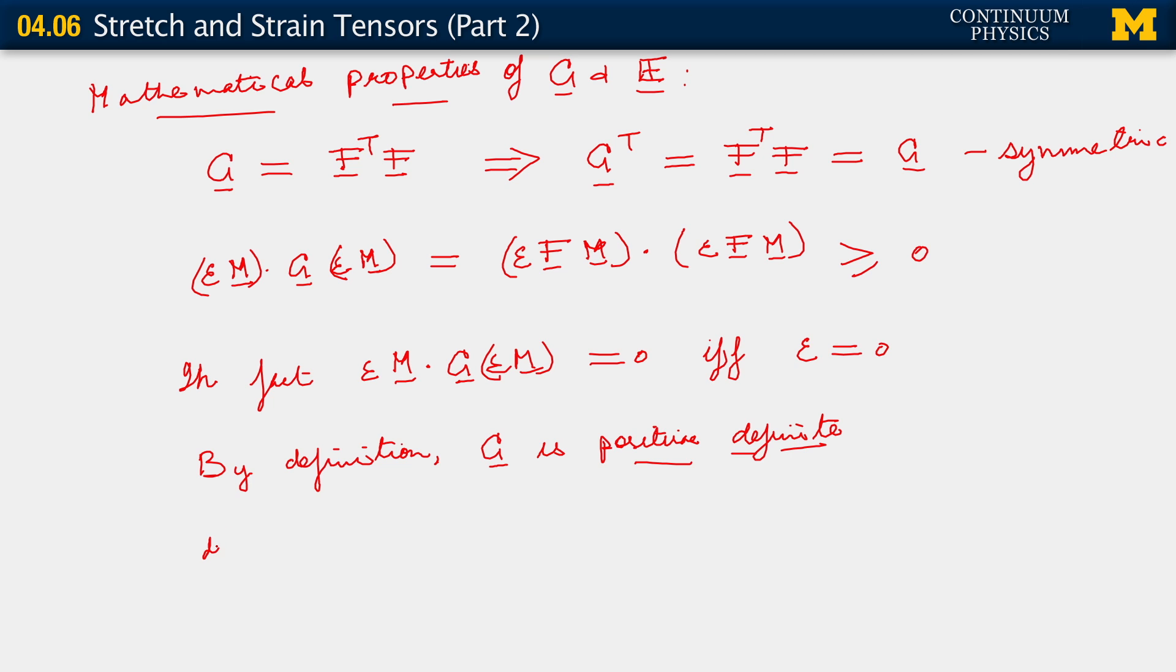One more thing. If we now consider the determinant of C, we observe that it is the determinant of F transpose F, which is the determinant of F, the whole squared, because the determinant of the transpose of a tensor is the same as the determinant of the original tensor. But we already knew that determinant of F has to be greater than 0 from our condition of local impenetrability of matter. It follows therefore that the determinant of C is also greater than 0.